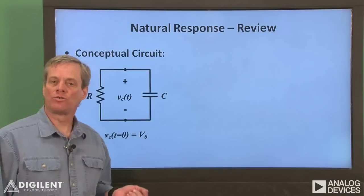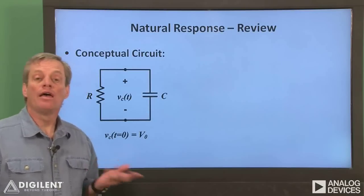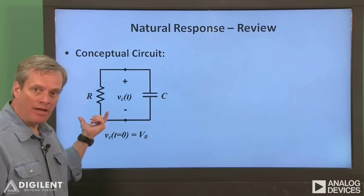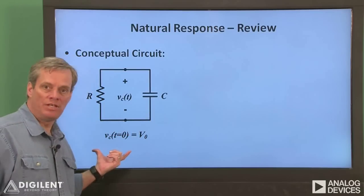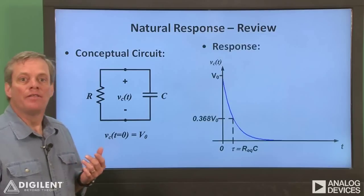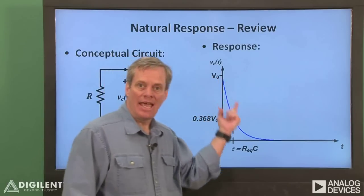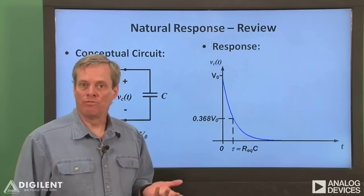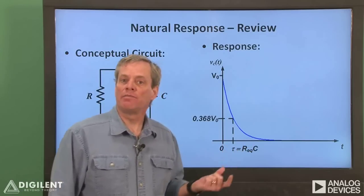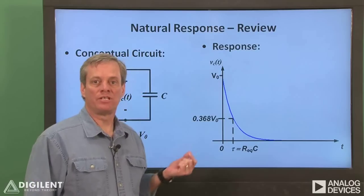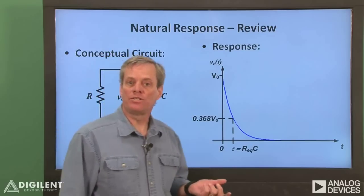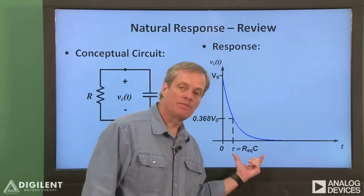First, just a quick reminder about the natural response of RC circuits. An RC circuit consists of a single capacitor and an equivalent resistance seen by that capacitor. The capacitor has some initial voltage V0, and we're interested in the capacitor voltage for all subsequent times. The capacitor voltage is going to decay exponentially with time from its initial voltage. The rate of decay is characterized by the time constant tau. The time constant is the amount of time taken for the signal to decrease to 36.8% of its initial value. For an RC circuit, the time constant is the equivalent resistance times the capacitance.